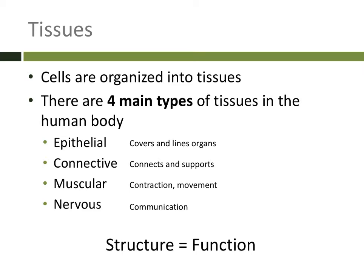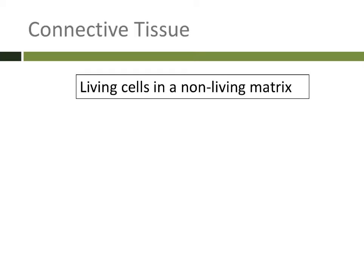Today we're going to be talking about connective tissue. Connective tissue's main function is to connect and support various parts of the body to one another. Connective tissue is very different from epithelial tissue and the types of connective tissue are very diverse. The one thing you can say about connective tissue is that it is characterized by having living cells in a non-living matrix.